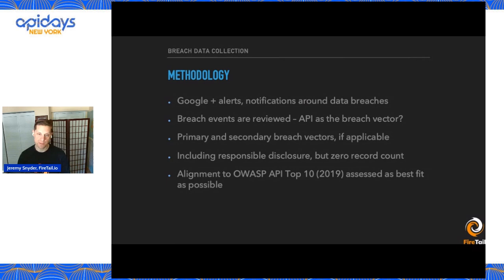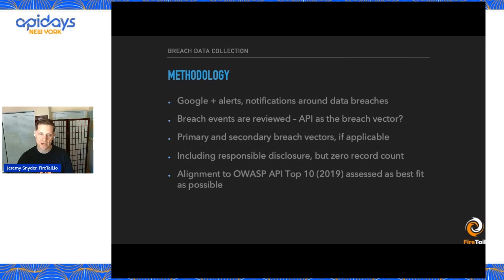We also try as best as possible to align to the OWASP API Top 10. If you look at our breach tracker, you will see those OWASP IDs in there. We are using the 2019 version — the current version. The 2023 release candidate, as of the time of recording, isn't yet finalized or ready for public consumption.